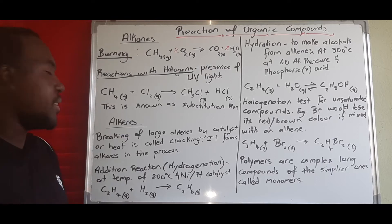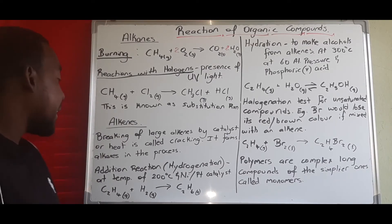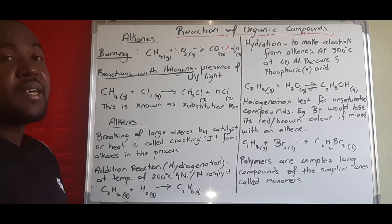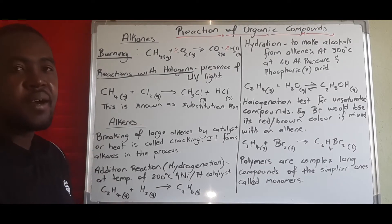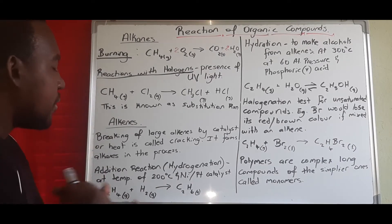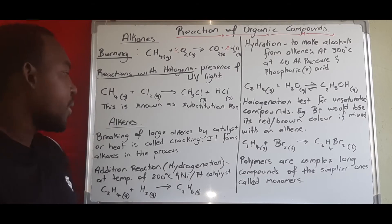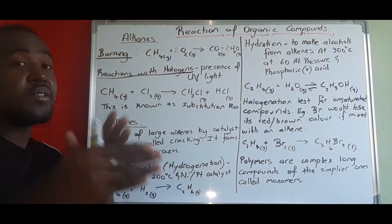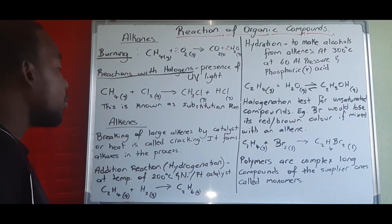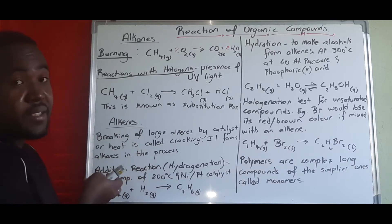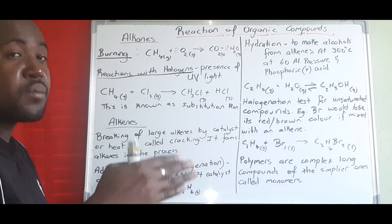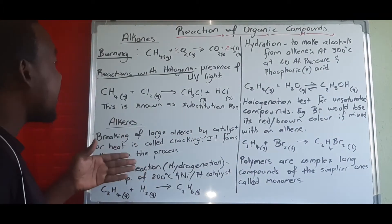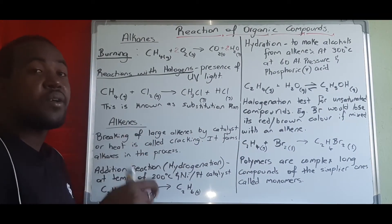Then we move to alkenes. The breaking of large alkenes by catalyst or heat is called cracking. So we have alkenes that have a lot of carbons — a long carbon chain — and we can break them up into smaller ones. When we break those bonds to make them smaller, the products become alkenes, and this process is called cracking.